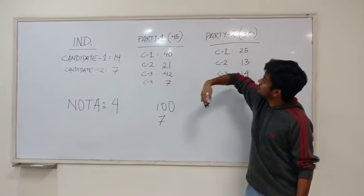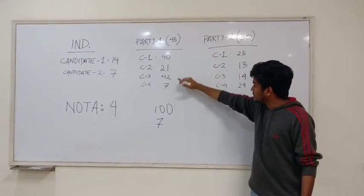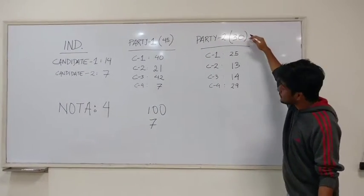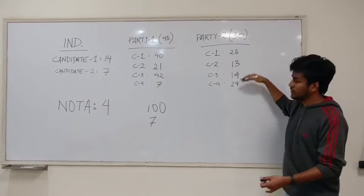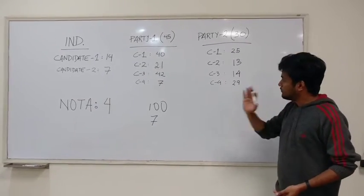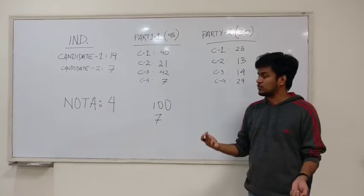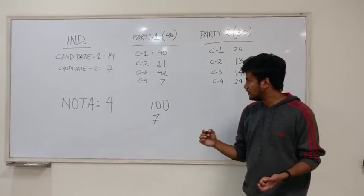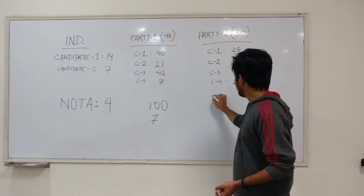Party 1 has gotten 45 votes overall with different votes for each member. Party 2 has 30 votes overall with different votes for each member. Now the first step in this process is to calculate something called the electoral quotient or the EQ.